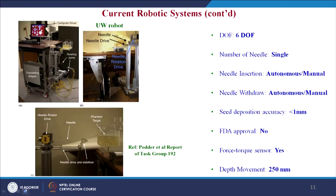Then comes the robotic system developed by the University of Wisconsin for automatic and semi-automatic radioactive source or seed placement. It has 6 degrees of freedom, involves a single needle, and supports both autonomous and manual needle insertion. Seed deposition accuracy is less than 1 mm. It is not FDA approved, is equipped with a force-torque sensor, and has a depth movement of 250 mm.